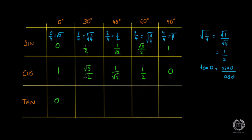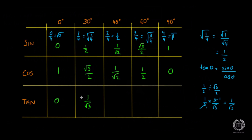For tan 30, sine is a half and cos is root 3 over 2, so we do half divided by root 3 over 2. Division means we flip it: half times 2 over root 3. We can cancel the 2s, leaving 1 over root 3. So tan 30 is 1 over root 3. For tan 45, we do 1 over root 2 divided by 1 over root 2, which cancels out to give 1.